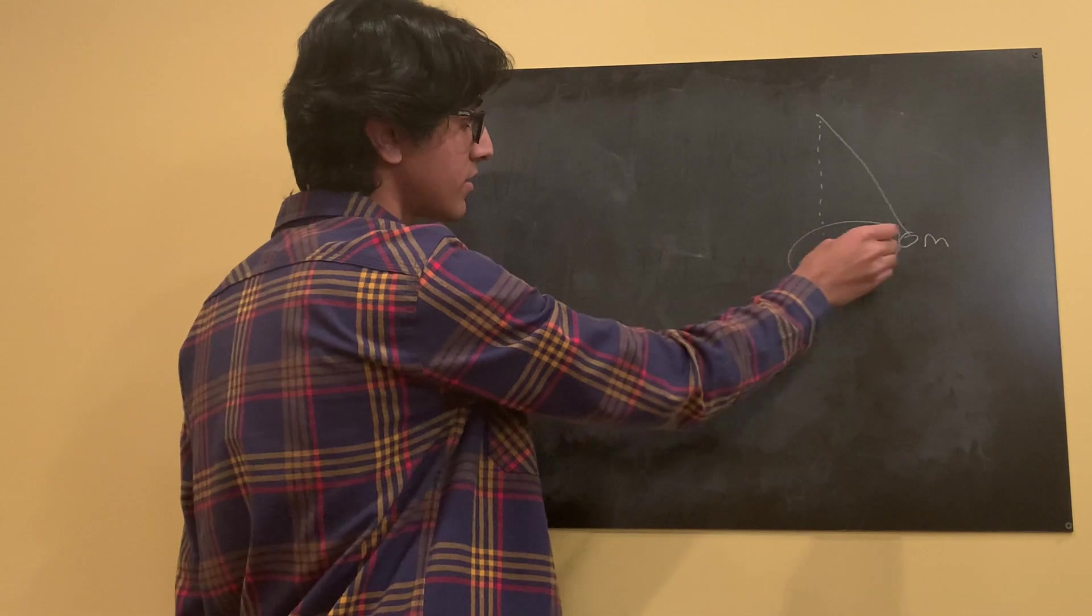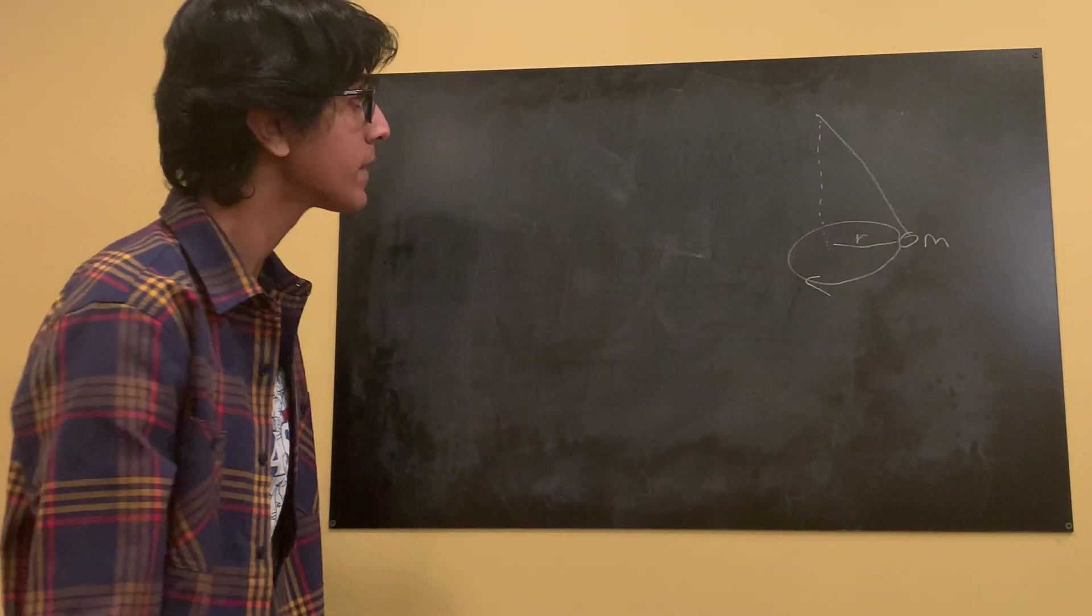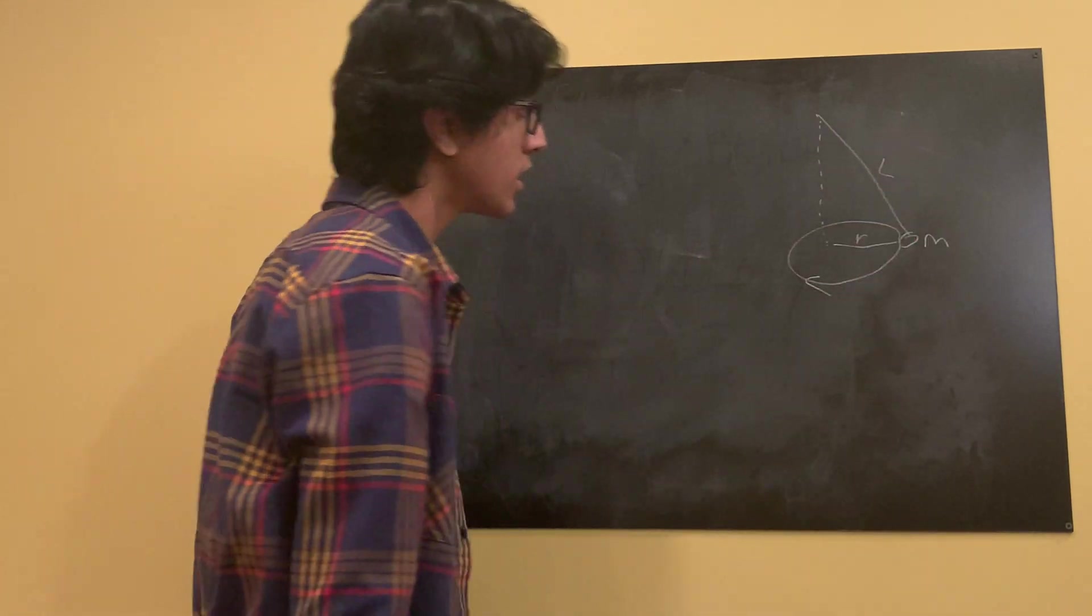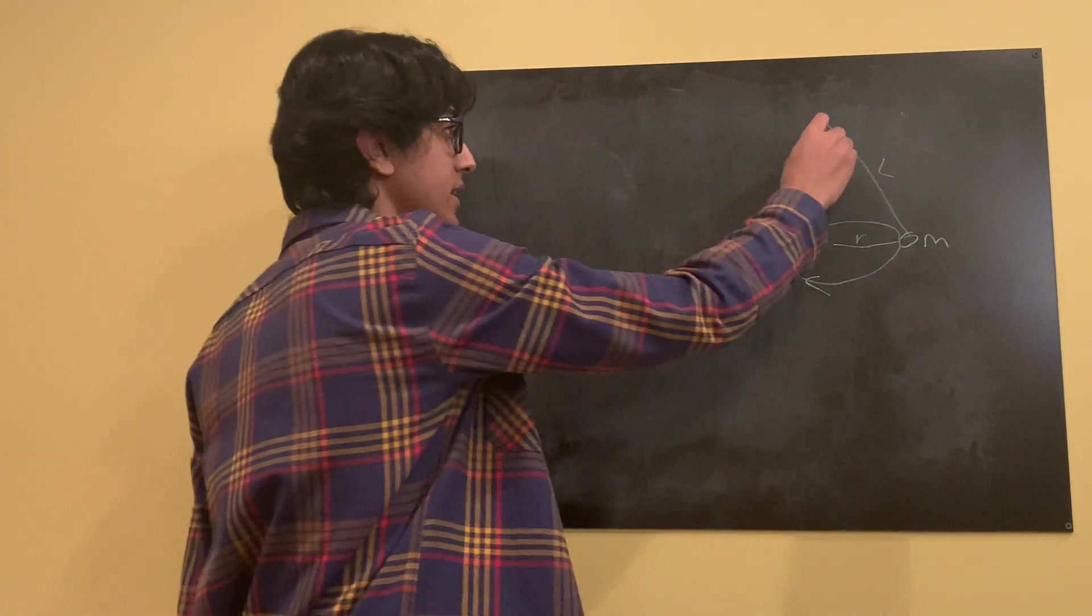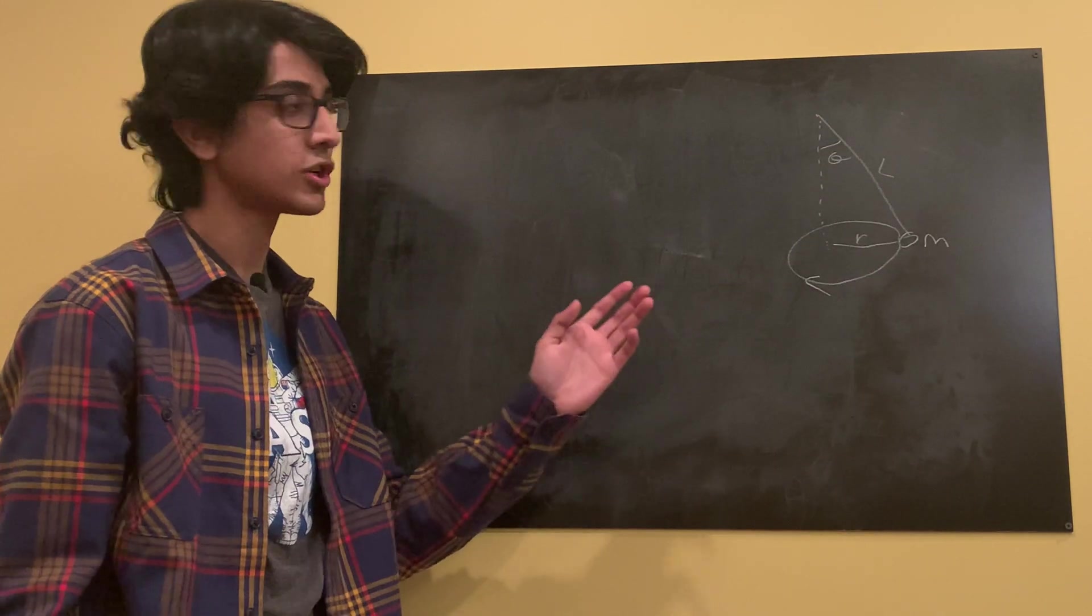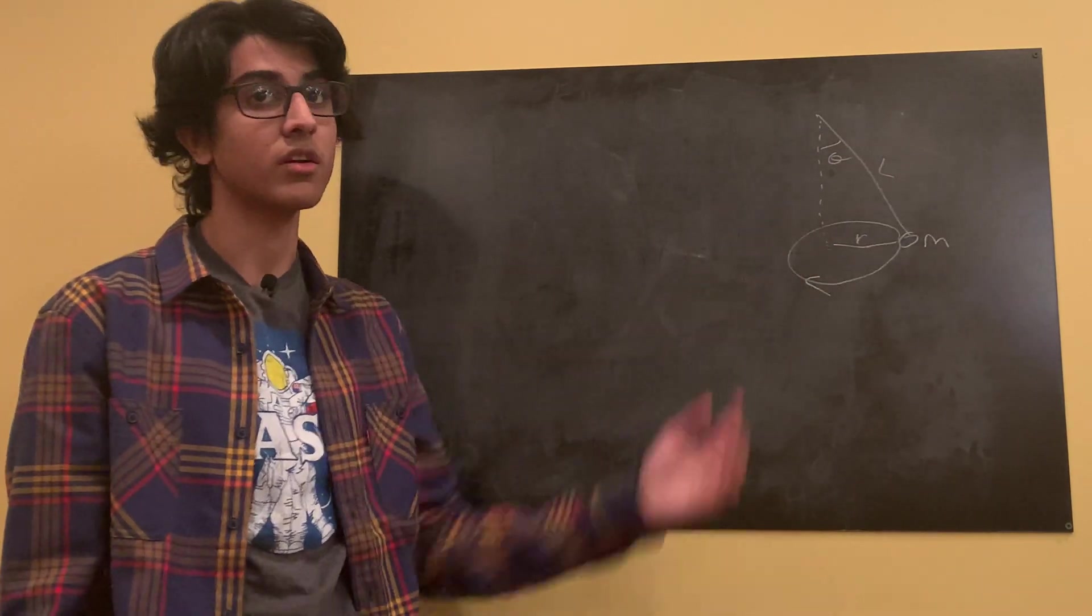And then from the distance, this radius of this circular motion, we'll put as R. And then the length of this string, we'll put as L. And then this angle right here will be theta. And we're going to try to find what this angle theta is in terms of these three other variables.